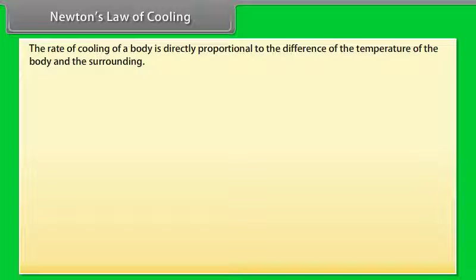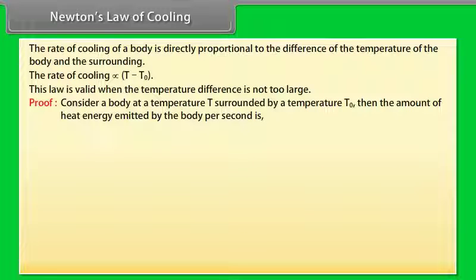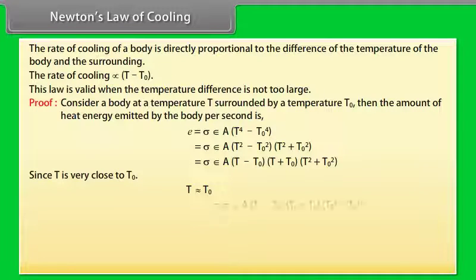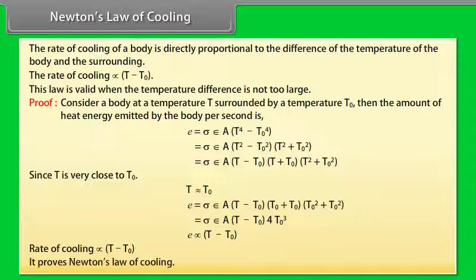Newton's Law of Cooling states that the rate of cooling of a body is directly proportional to the difference between the temperature of the body and its surroundings: rate of cooling ∝ (T − T₀). This law is valid when the temperature difference is not too large. Proof: For a body at temperature T surrounded by temperature T₀, energy emitted per second E = σεA(T − T₀)(T + T₀)(T² + T₀²). When T is very close to T₀, E ∝ (T − T₀), proving Newton's Law of Cooling.